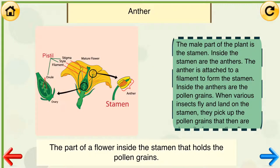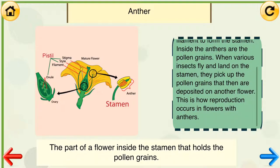Anther: the part of a flower inside the stamen that holds the pollen grains. The male part of the plant is the stamen. Inside the stamen are the anthers. The anther is attached to a filament to form the stamen. Inside the anthers are the pollen grains. When various insects fly and land on the stamen, they pick up the pollen grains that are deposited on another flower. This is how reproduction occurs in flowers with anthers.